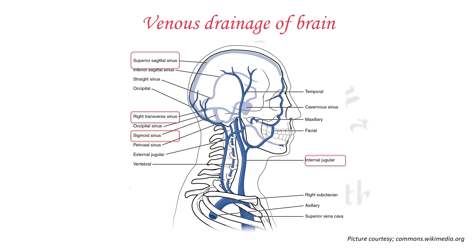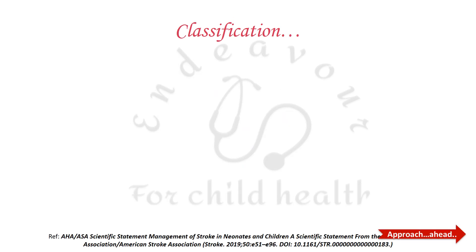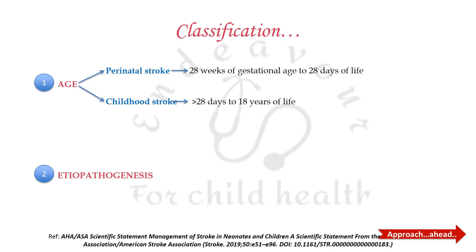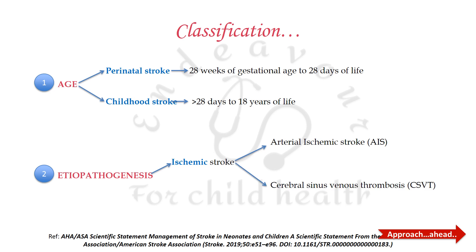The AHA-ASA has classified stroke on two criteria: age and etiopathogenesis. By age, it can be perinatal stroke, extending from 28 weeks of gestation to 28 days of life, or childhood stroke from more than 28 days of life to 18 years. Etiopathologically, it can be ischemic stroke — either arterial ischemic stroke or venous ischemic stroke known as cerebral sinovenous thrombosis — or it can be a hemorrhagic stroke.